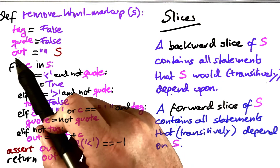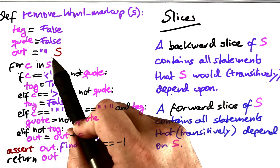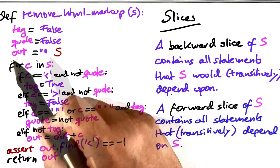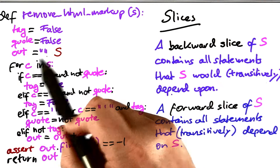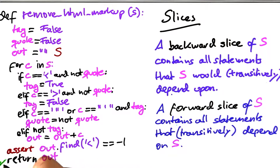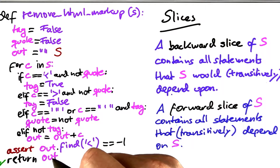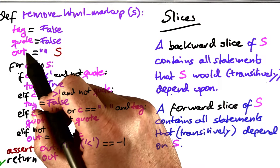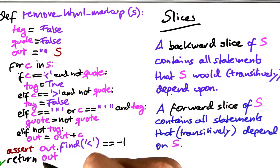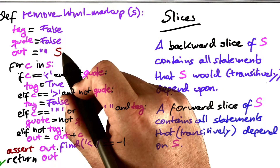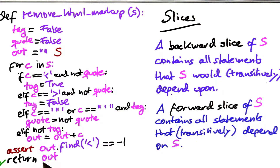As an example, let's come up with a forward slice of the initialization of the out variable. Very obviously, the final return statement is part of the forward slice, because it reads from a variable which is set over here — namely out — therefore it is data dependent on this earlier statement, and therefore it's part of the forward slice.